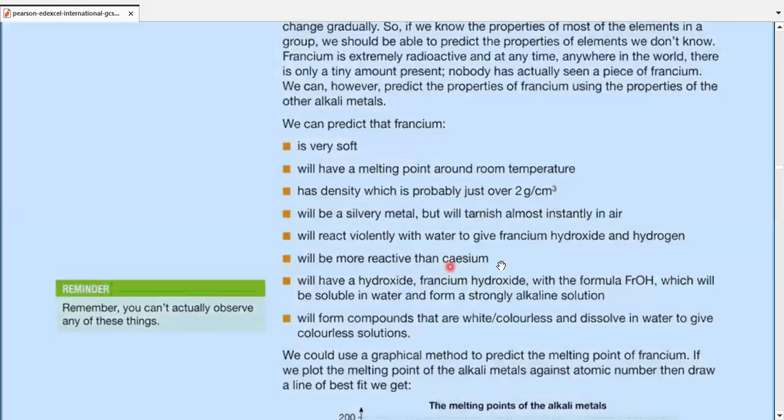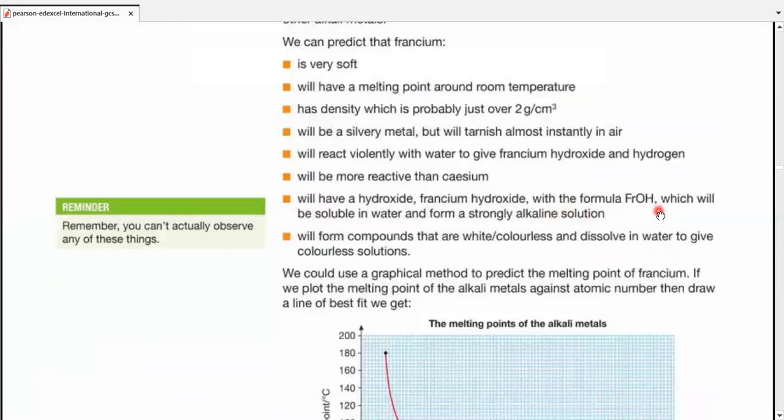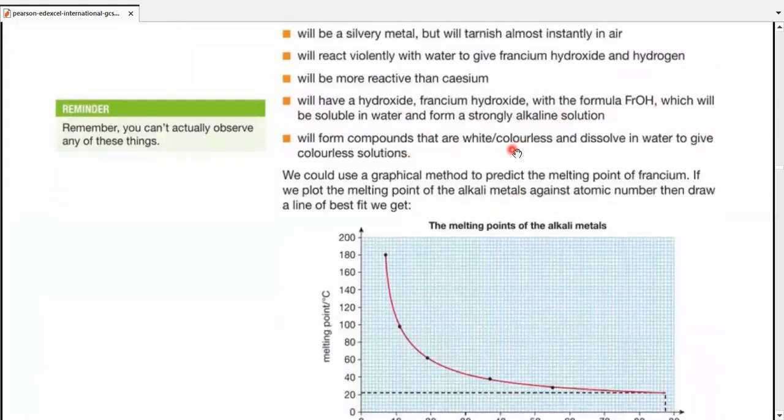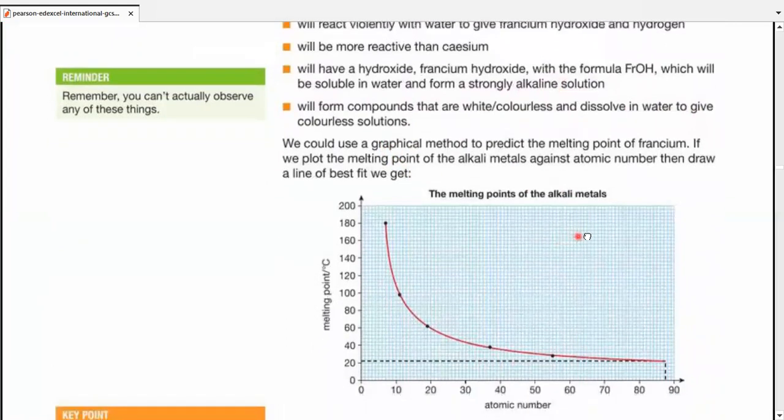It will have a hydroxide, francium hydroxide with the formula FrOH, which would be soluble in water and form an extremely strongly alkaline solution. And its compounds would be white or colorless, which would dissolve in water to give colorless solutions.